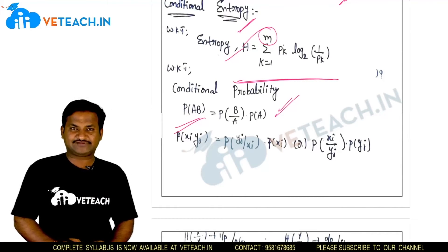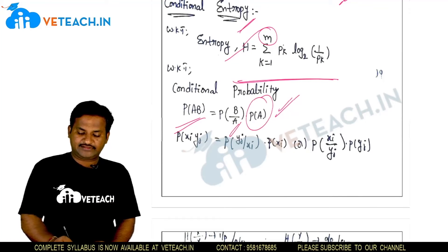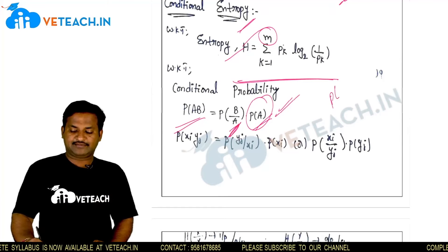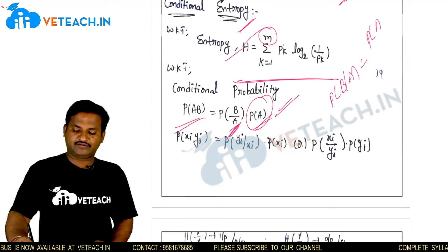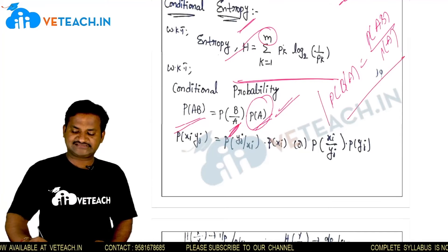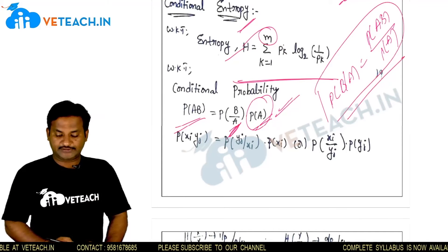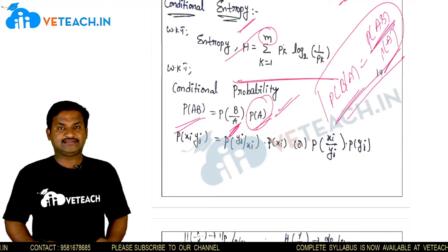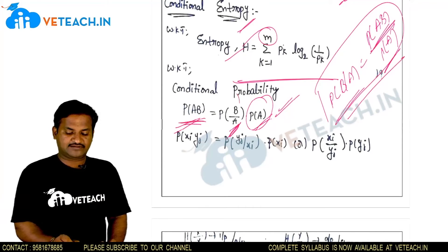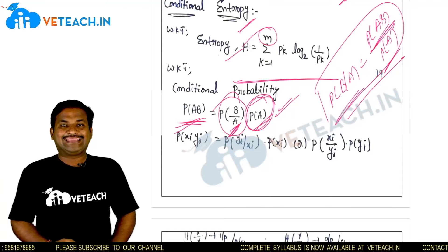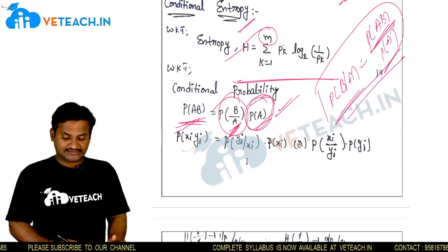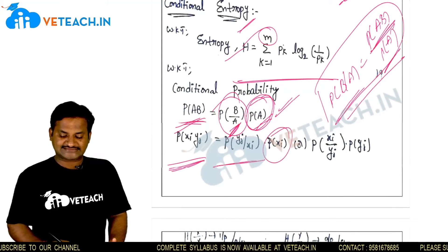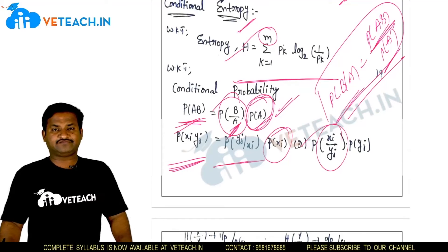From basic conditional probability: p(a,b) = p(b|a)·p(a), so p(b|a) = p(a,b)/p(a). Similarly, p(xi, yj) = p(yj|xi)·p(xi), or equivalently p(xi|yj)·p(yj). These are the foundational relationships used to define conditional entropy.